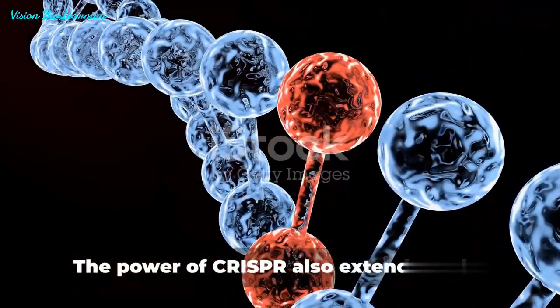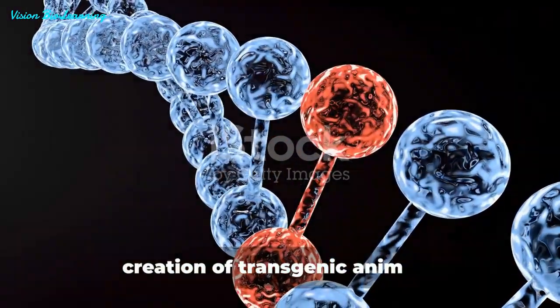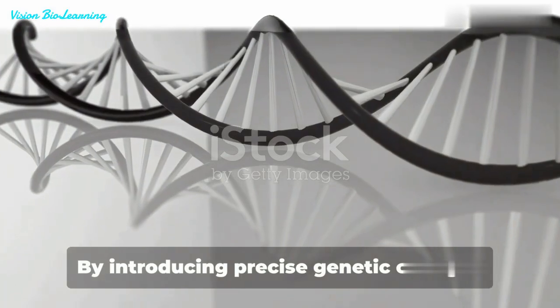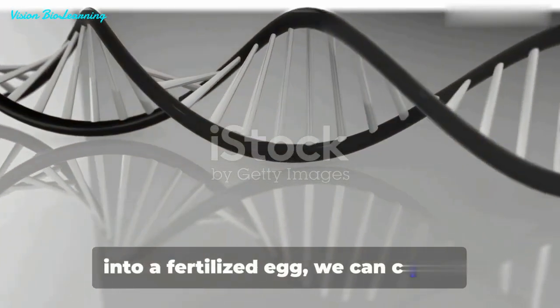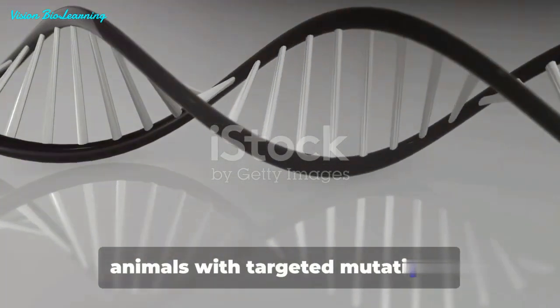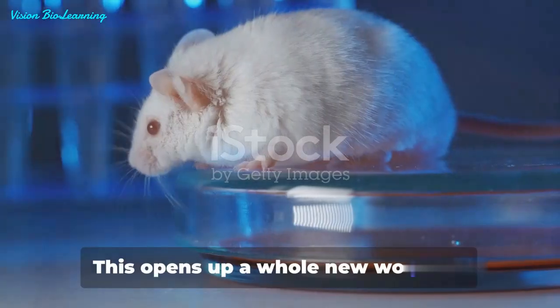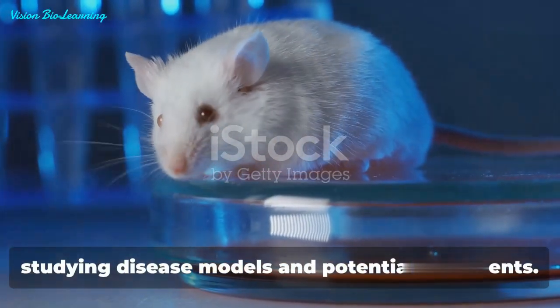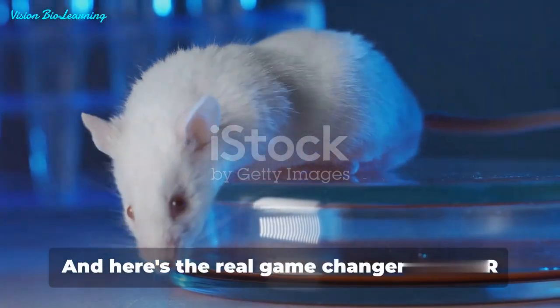The power of CRISPR also extends to the creation of transgenic animals. By introducing precise genetic changes into a fertilized egg, we can create animals with targeted mutations. This opens up a whole new world for studying disease models and potential treatments.